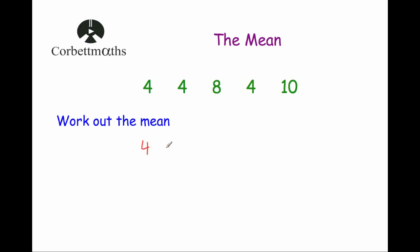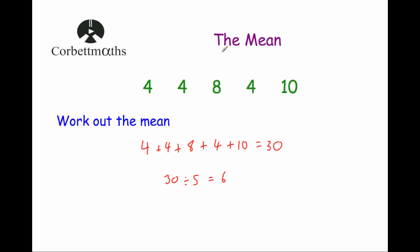So 4 plus 4 is equal to 8, plus 8 is equal to 16, plus 4 is equal to 20, plus 10 is equal to 30. So these numbers add together to be 30. And now because there's 5 of them, we just do 30 divided by 5, which is 6. So the mean for this list of numbers is 6.